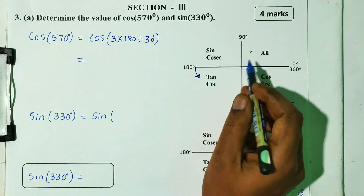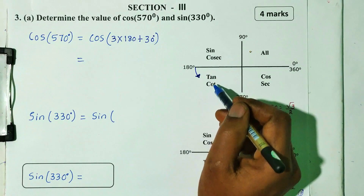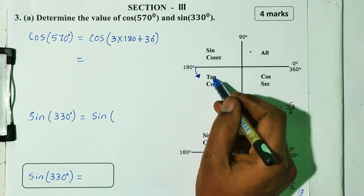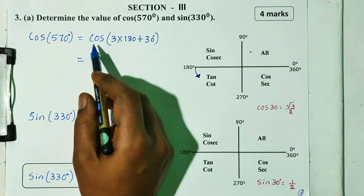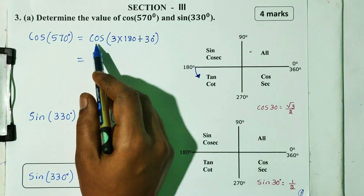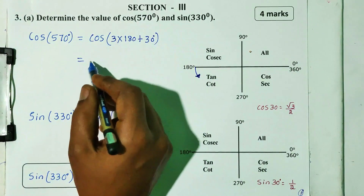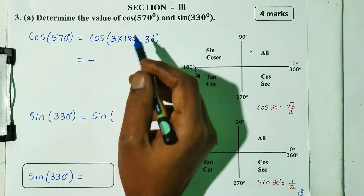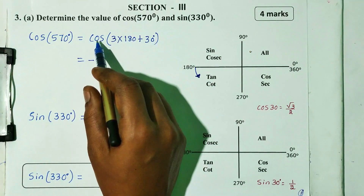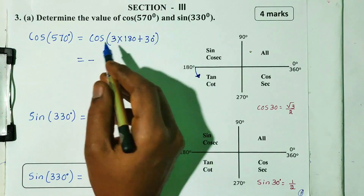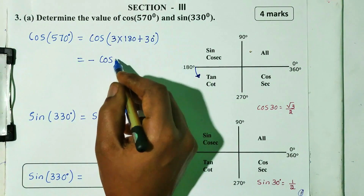So, this is the answer. First, second and third quadrant. In the third quadrant, cosine is negative. So, this is negative. Here is 180. Cos is negative.